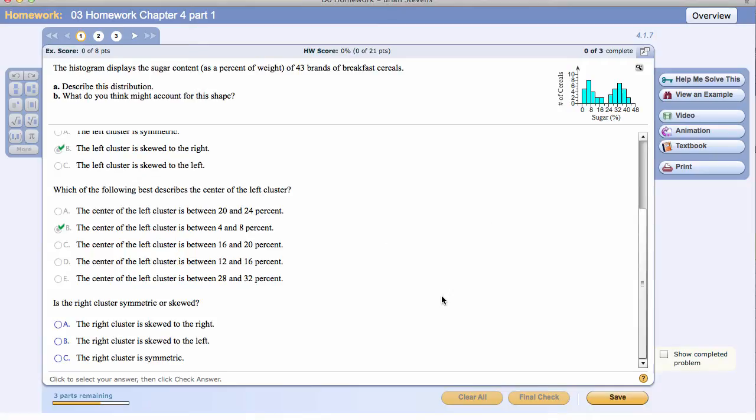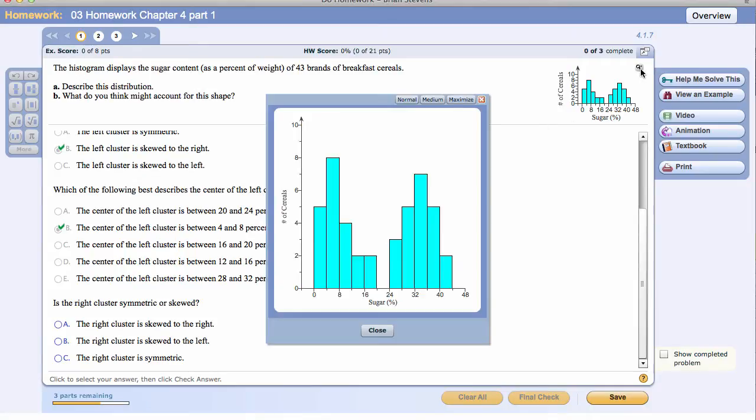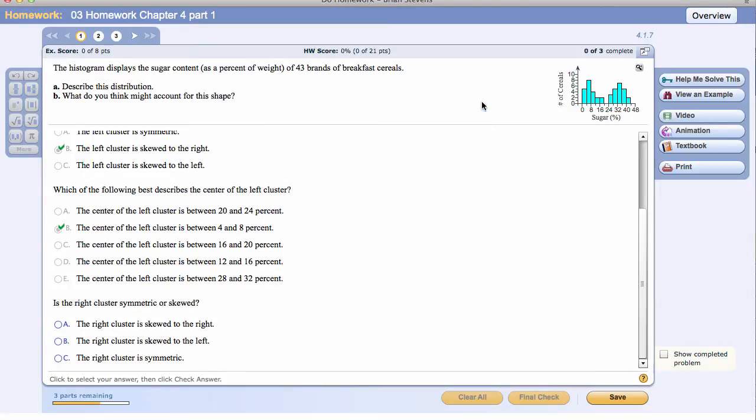Is the right cluster symmetric or skewed? Although not perfect, you can see maybe the tiniest bit of right skew, but that's not going to count. This one is a good example of a symmetric cluster right here. That would be a unimodal symmetric cluster. So let's go ahead and say it is symmetric.